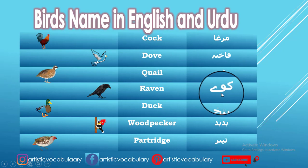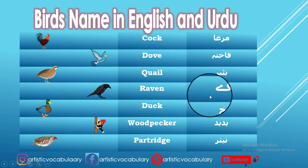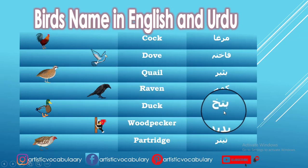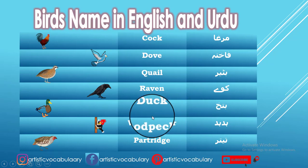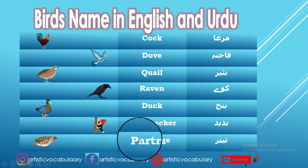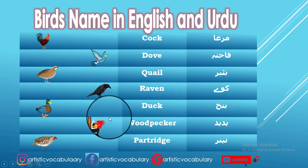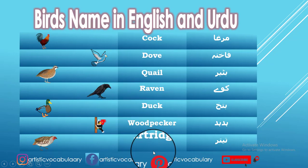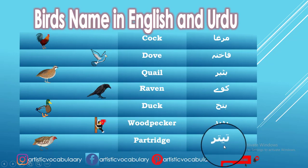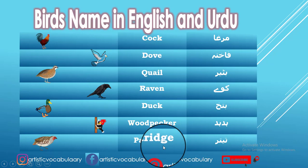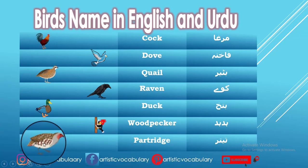Kave — Raven. Batak — Duck. Hudhud — Woodpecker. Teeter — in English we call it Partridge. Note: the D is silent in Partridge.